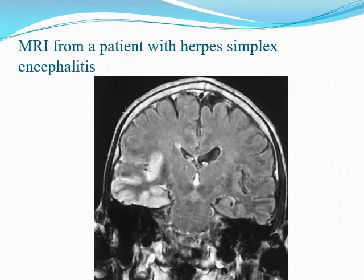This is an MRI from a patient with herpes simplex encephalitis. It shows a right temporal hyperintense lesion, characteristic of herpes simplex.